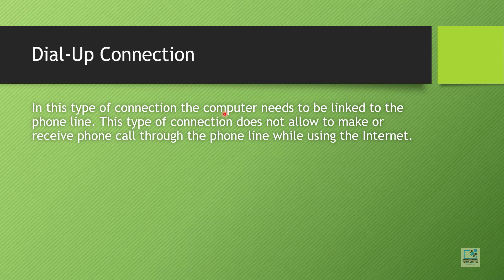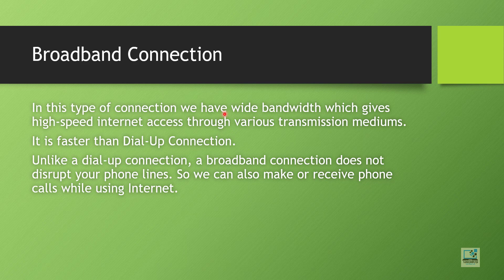Let us discuss types of internet connections. The first is dial-up connection. In this type, the computer needs to be linked to the phone line. This type of connection does not allow you to make or receive phone calls through the phone line while using the internet — you can either use it for internet or for phone calls, but not both at the same time.